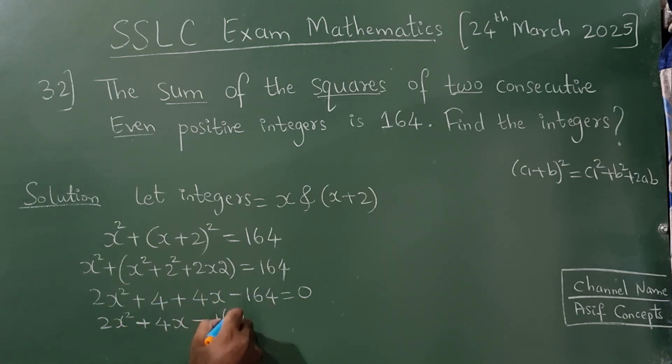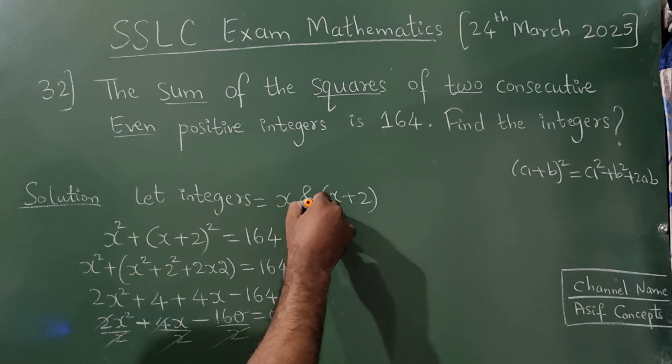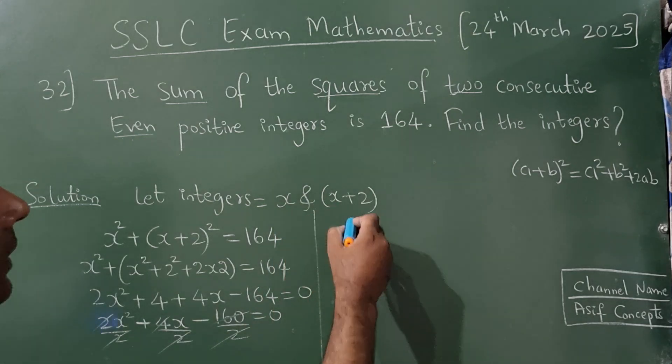Now all these are divisible by 2. Now 2 and 2 get cancelled, 2 1s are 2, 2s are 2, 1s are 2, 80s are. I can write this as x square plus 2x minus 80 is equal to 0.